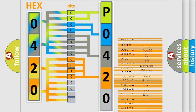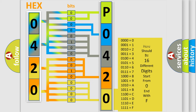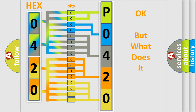A single byte conceals 256 possible combinations. We now know in what way the diagnostic tool translates the received information into a more comprehensible format. The number itself does not make sense to us if we cannot assign information about what it actually expresses.